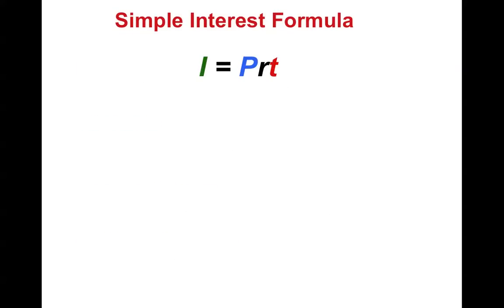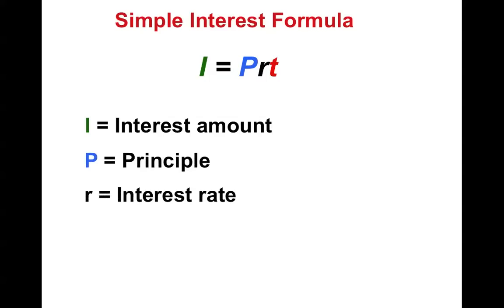So here's the formula for the interest. I equals PRT. I is the interest amount, P is the principle, R is the interest rate, and T is the time. And it's important to remember that that's in years.